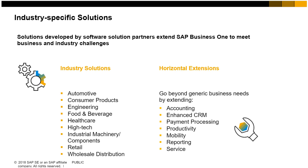SAP's partner ecosystem provides multiple solutions for small businesses to meet business and industry challenges. Solutions developed by software solution partners extend the functionality of SAP Business One, helping customers meet unique challenges by combining the power of industry-specific solutions with horizontal extensions that go beyond generic business needs. The solutions are fully integrated into SAP Business One and certified by SAP. They can be deployed on-premise, in the cloud, or for SAP Business One version for SAP HANA.